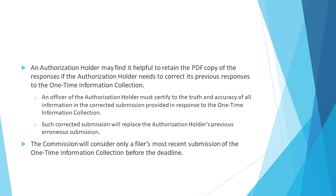An officer of the authorization holder must certify to the truth and accuracy of all information in the corrected submission. Such corrected submission will replace the authorization holder's previous erroneous submission. The Commission will consider only a filer's most recent submission of the one-time information collection before the deadline.